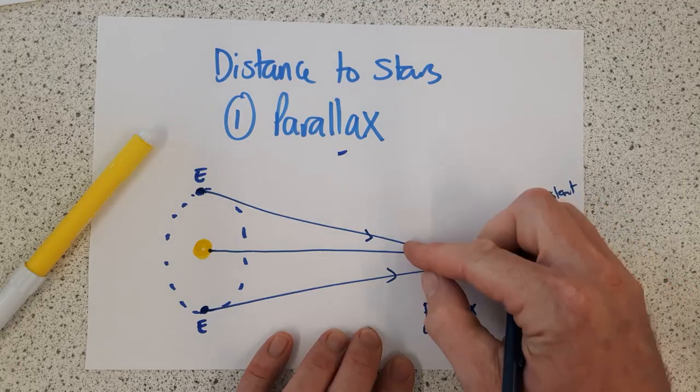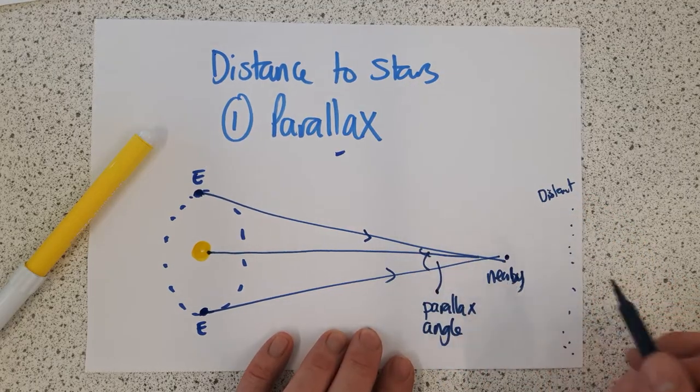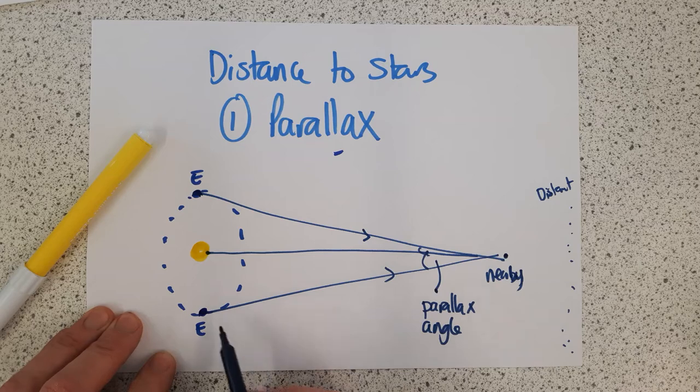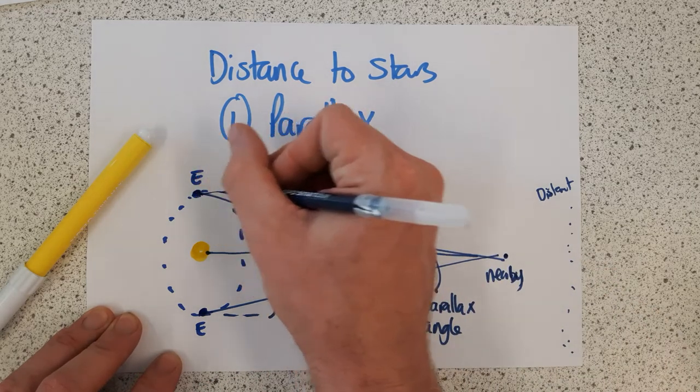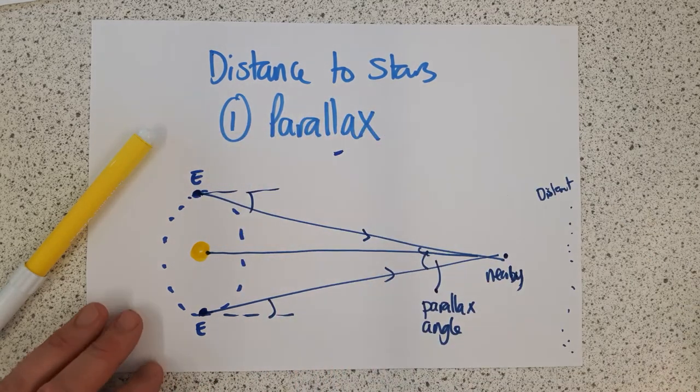The parallax angle is half of the total angle subtended here, which is also the same as this. This is also the parallax angle here by similar triangles.